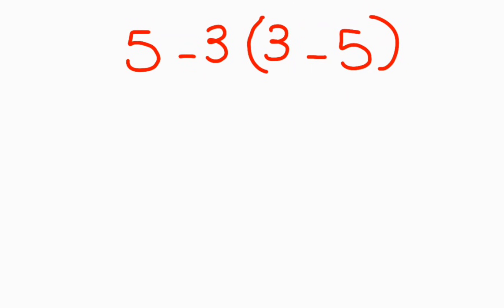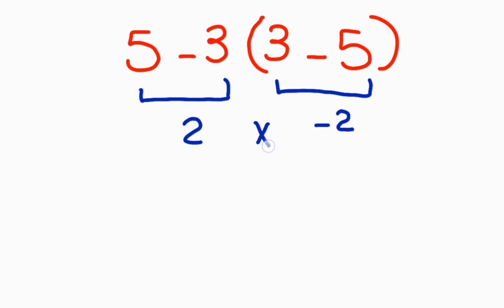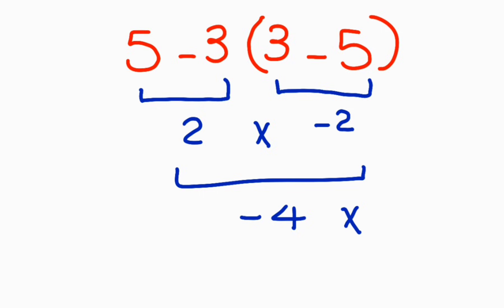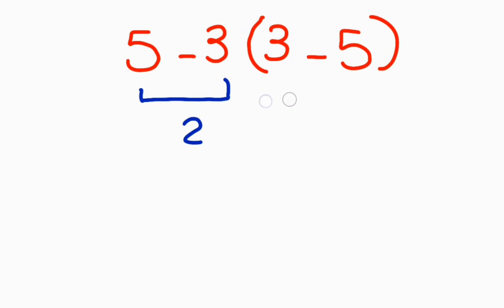Hey guys, welcome to our channel. The problem is 5 minus 3 times (3 minus 5). Please subscribe to our channel if you like this video. Now, 3 minus 5 equals negative 2, 5 minus 3 equals 2, and 2 times negative 2 equals negative 4. But this answer is not correct according to the rules of mathematics — PEMDAS.